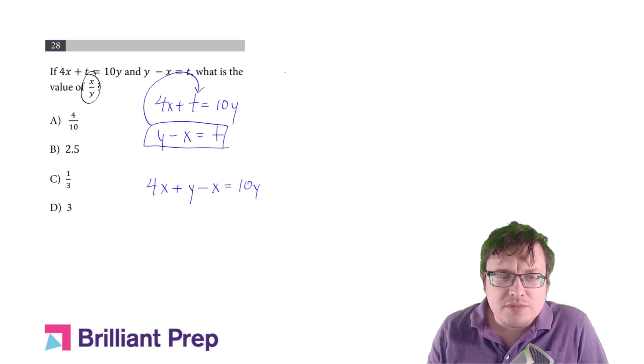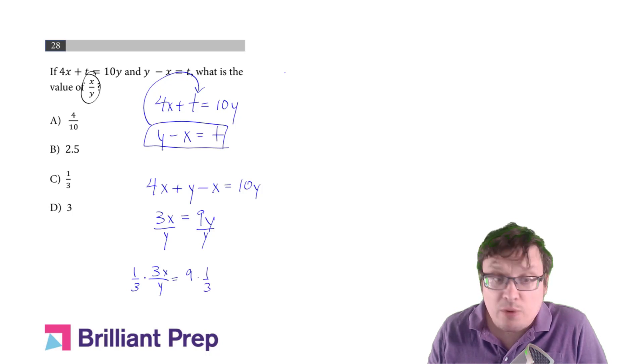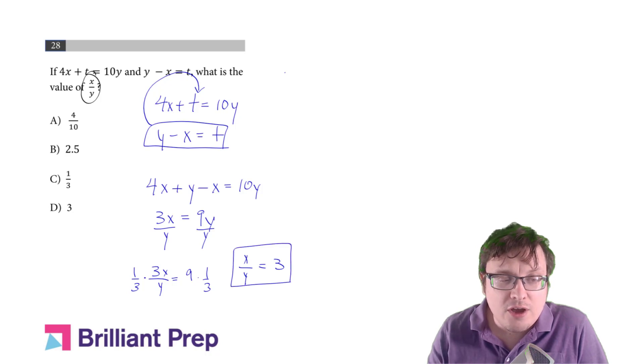Combine like terms, so I'll get 3x on the left and 9y on the right, and here we go. If I go ahead and divide both sides by y, I'll get 3x over y equals 9. Now, either divide both sides by 3, multiply both sides by 1 third, whatever you like. Either way, you get x over y is 3, and there you go.